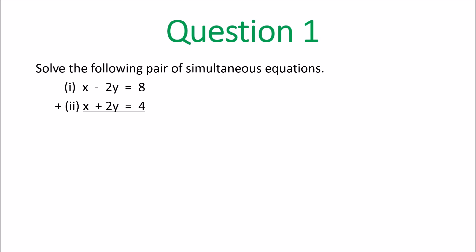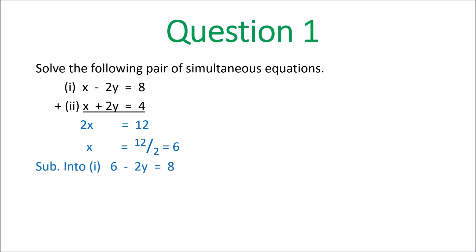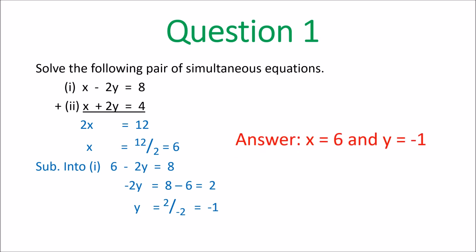You add equation 1 and equation 2 — the first thing is 2x is equal to 12. You add to get rid of the y's. 2x is 12, so x is 12 divided by 2, x is 6. Once you get x is 6, substitute it into equation 1: 6 minus 2y is 8. So negative 2y is 8 minus 6, negative 2y is 2. Divide by negative 2: y is equal to 2 divided by negative 2, y is equal to negative 1. Answer: x is 6, y is equal to negative 1.